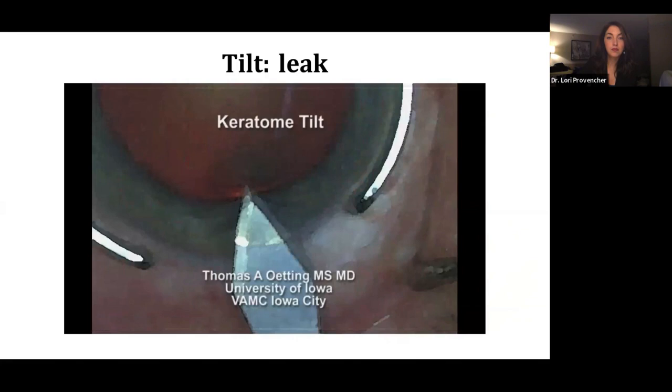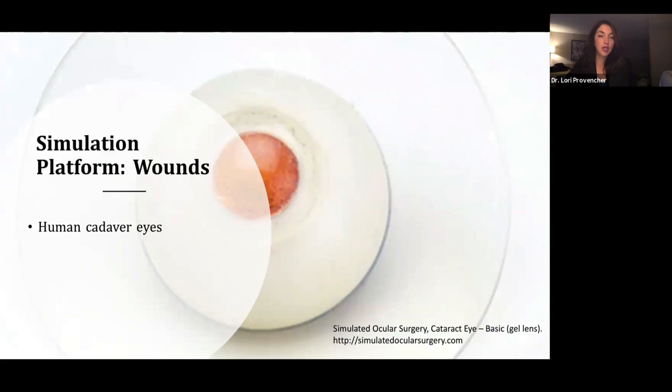There are several simulation platforms you can use when it comes to practicing wounds. Obviously, human cadaver eyes are the best if you have access to those. Porcine or bovine eyes can be really great. And model eyes are out there. This is a model eye in the background here from Simulated Ocular Surgery. I've used this and found the cornea to be very true, especially when it comes to wounds or even suturing wounds.